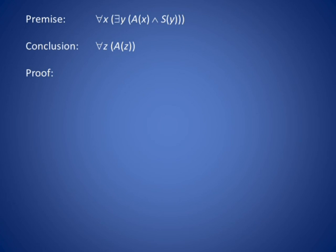To do that, we would universally instantiate the x to an arbitrary symbol, and then existentially instantiate y, then simplify by removing the S from the conjunction. In which case, we only have A left, and then universally generalize the statement of A. If you would like to complete this proof on your own, please pause the video now.